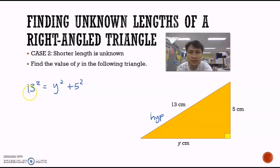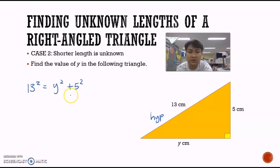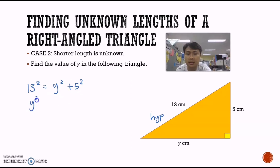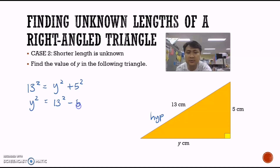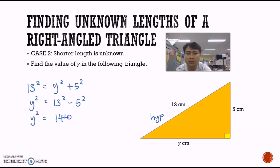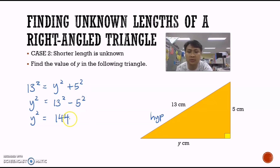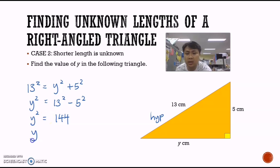Notice that 13 squared and 5 squared are on different sides of the equation — previously we added values, but because they are on different sides, now we do a subtraction. So y squared equals 13 squared minus 5 squared. Using the calculator, y squared equals 144. To find y, we take the square root of 144.